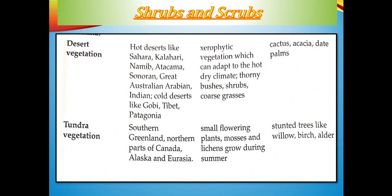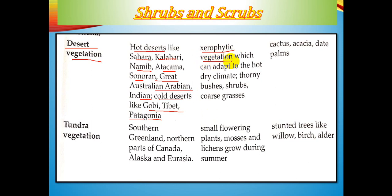Shrubs and scrubs are found in hot and cold deserts. Hot deserts include the Sahara, Kalahari, Namib, Atacama, Sonoran, Great Australian, Arabian, and Indian deserts. Cold deserts include the Gobi, Tibet, and Patagonia. The vegetation type in these areas is xerophytic — from Greek words 'xeros' meaning dry and 'phuton' meaning plant — referring to dry plants that adapt to hot, dry climates.